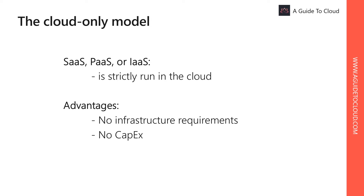The cloud-only model describes a situation where the services model you want to use — whether SaaS, PaaS, or IaaS — is strictly run in the cloud. There isn't any connection to existing on-prem based systems. One of the advantages of this model is that an organization doesn't have to concern itself with the infrastructure the services run on; all the backend functionality is invisible. For smaller companies such as startups or non-profits that don't have in-house resources and capital to purchase and maintain their own infrastructure, the cloud-only model can be a good choice.